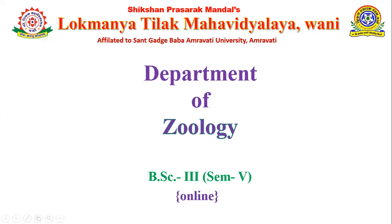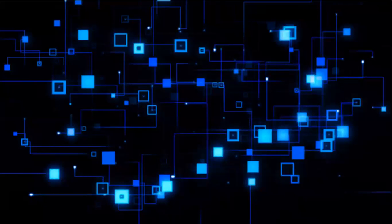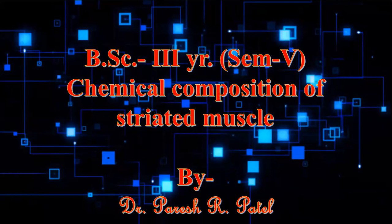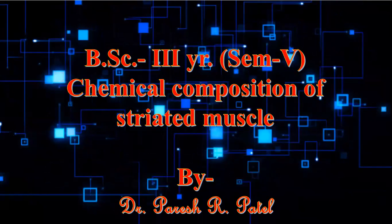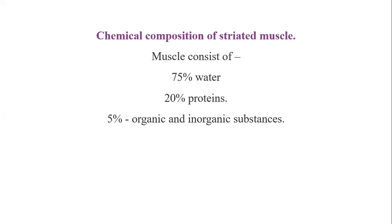Welcome to our lecture on Chemical Composition of Striated Muscles. In this topic we are going to discuss what components are present in striated muscles. Each muscle consists of 75% water, 20% proteins, and 5% organic and inorganic substances.